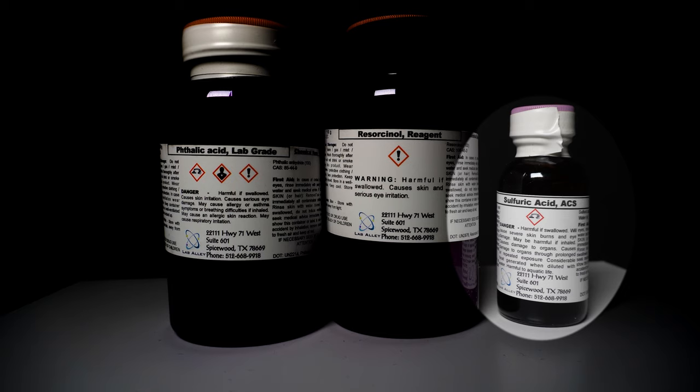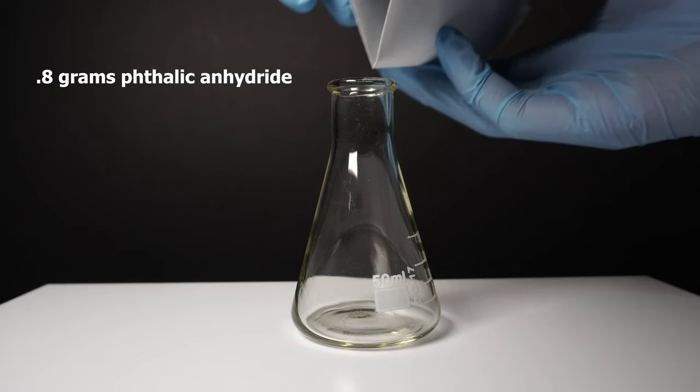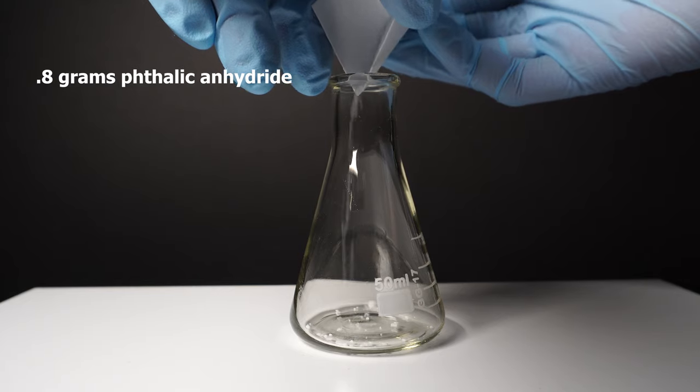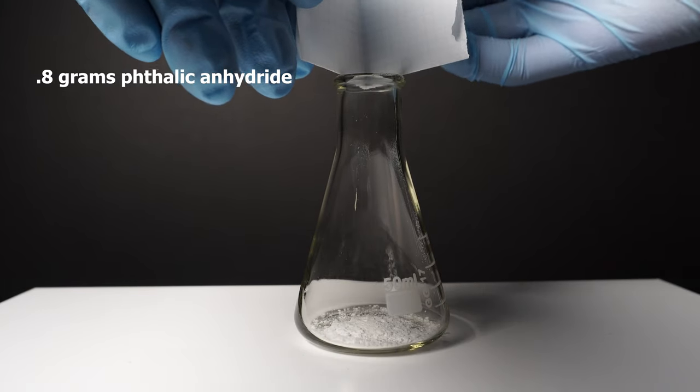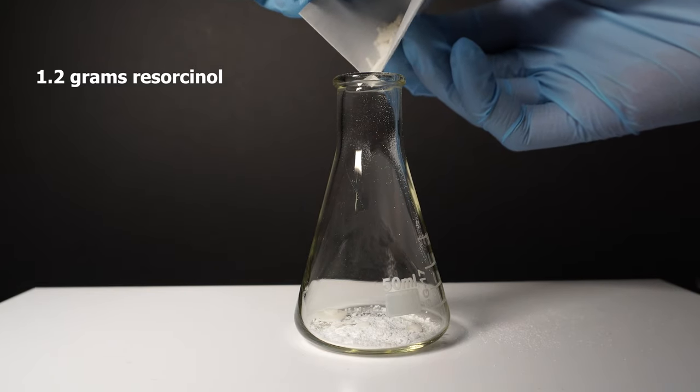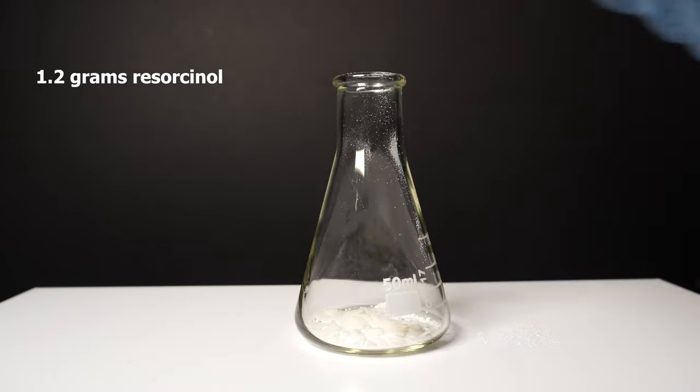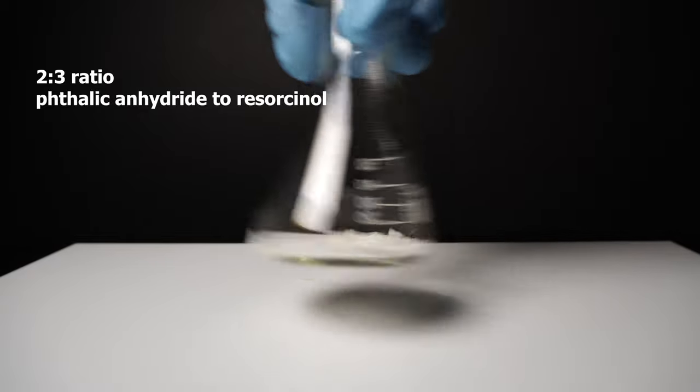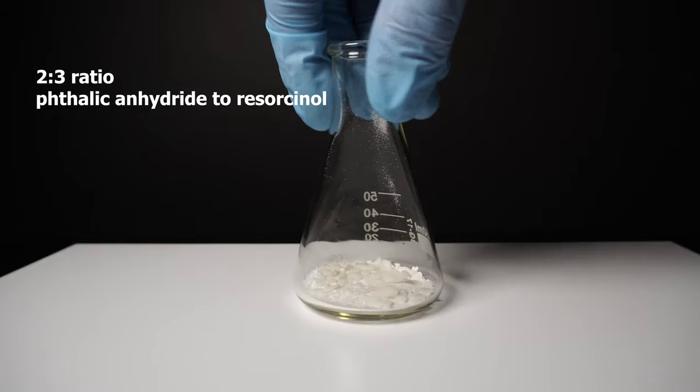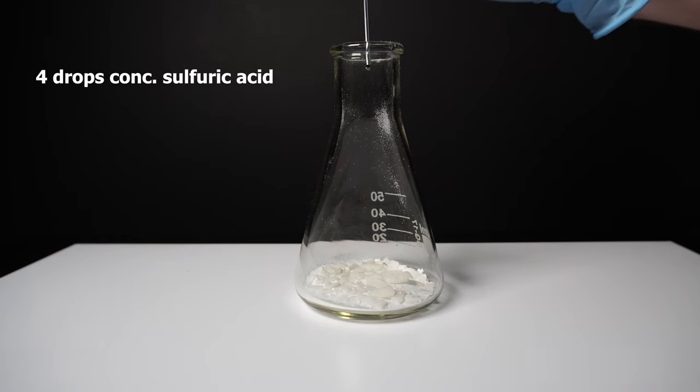However, in most papers I have read, they actually use zinc chloride instead. We start by adding 0.8 grams of phthalic anhydride to a 50 milliliter Erlenmeyer flask, followed by 1.2 grams of resorcinol. The amounts can be scaled up or down depending on how much you want to make. Just make sure to keep about a 2 to 3 ratio of phthalic anhydride to resorcinol. Next we add 3 to 5 drops of concentrated sulfuric acid.